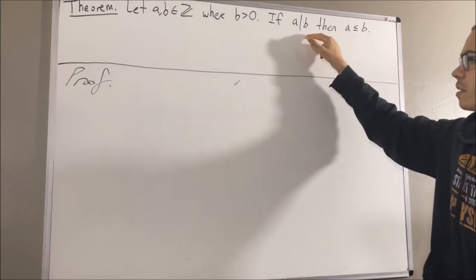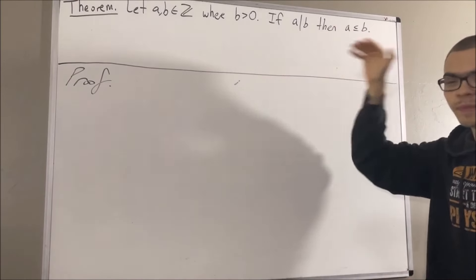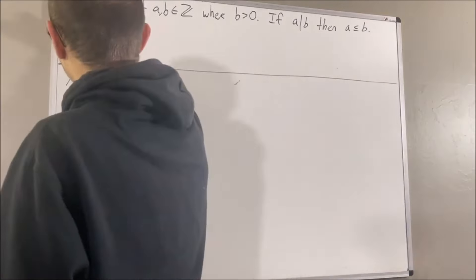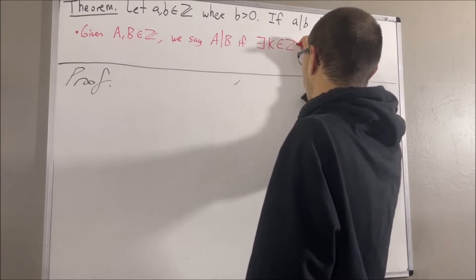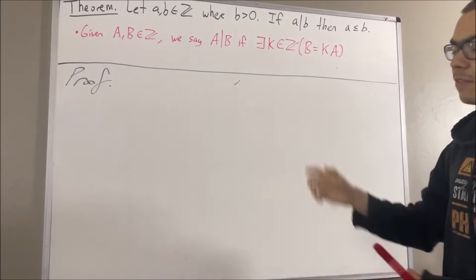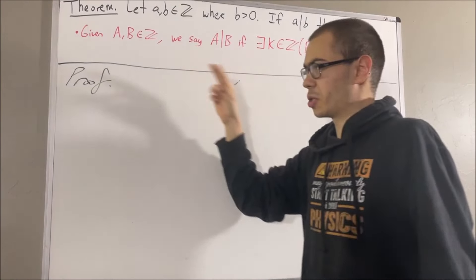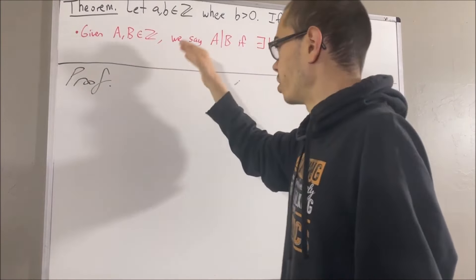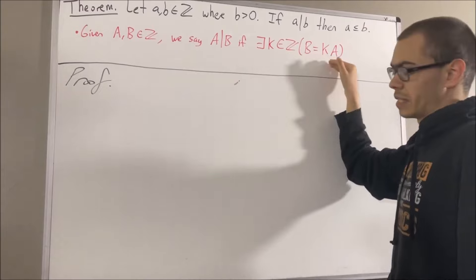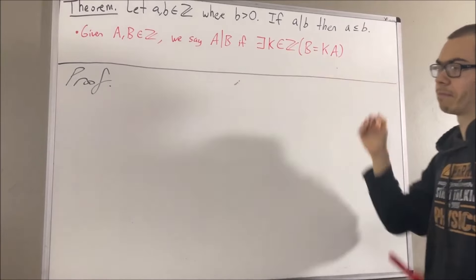What do we mean by this? We mean the following. Given any two integers a and b, we'll say that a is a divisor of b if there exists an integer k such that b is equal to ka.